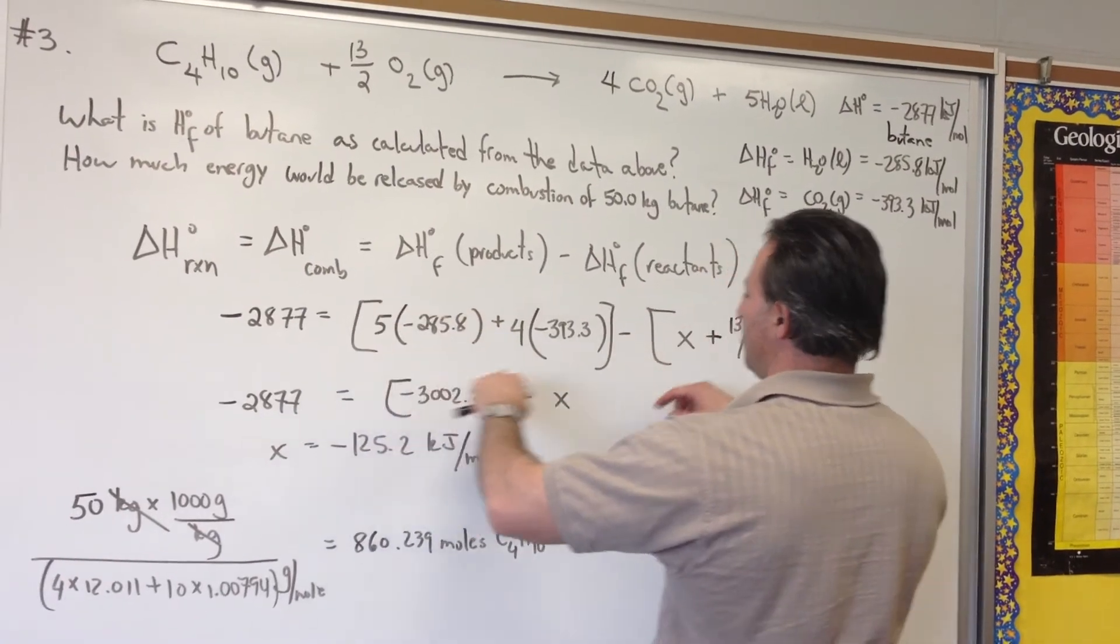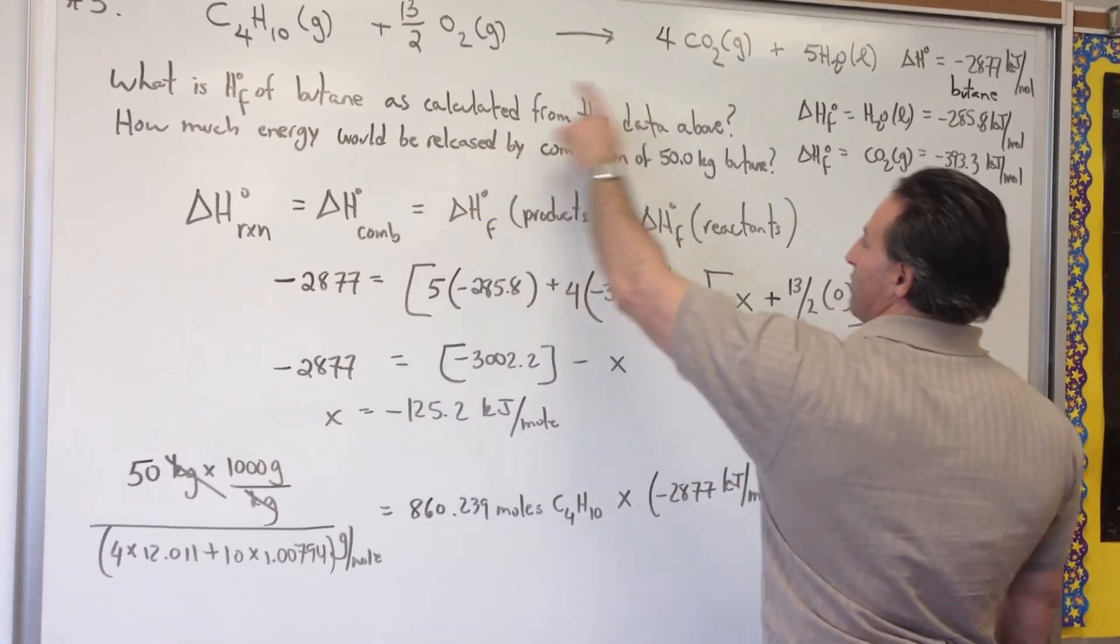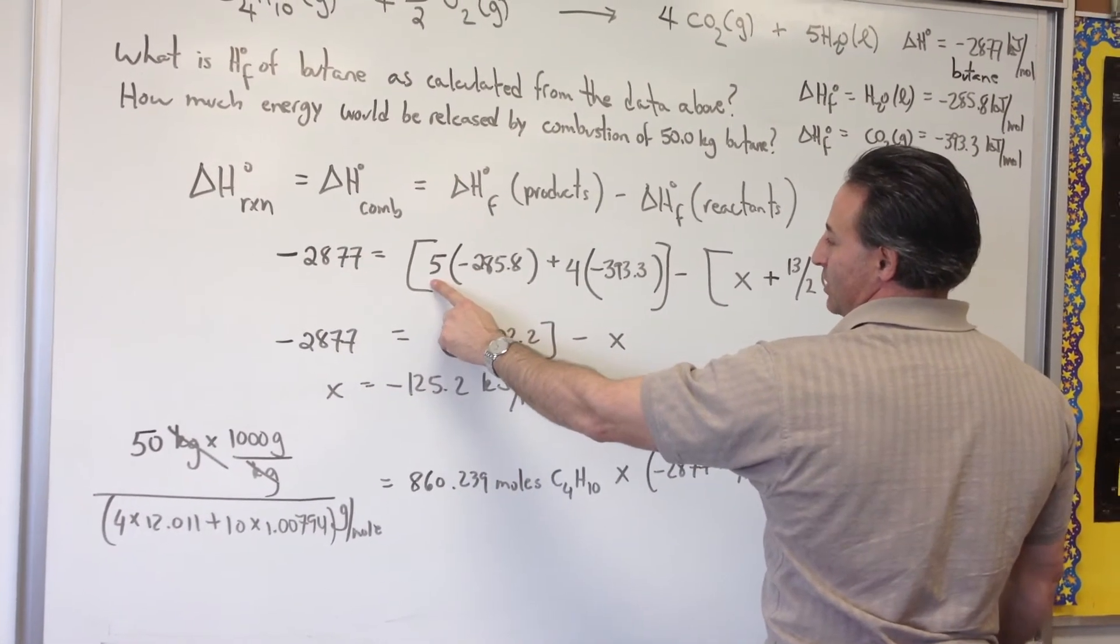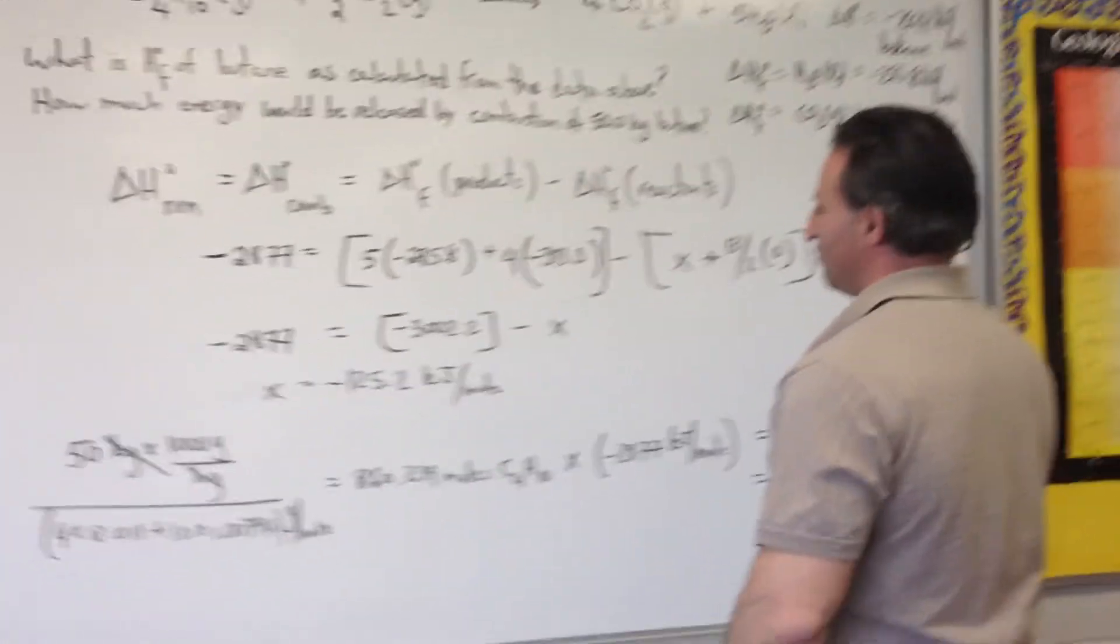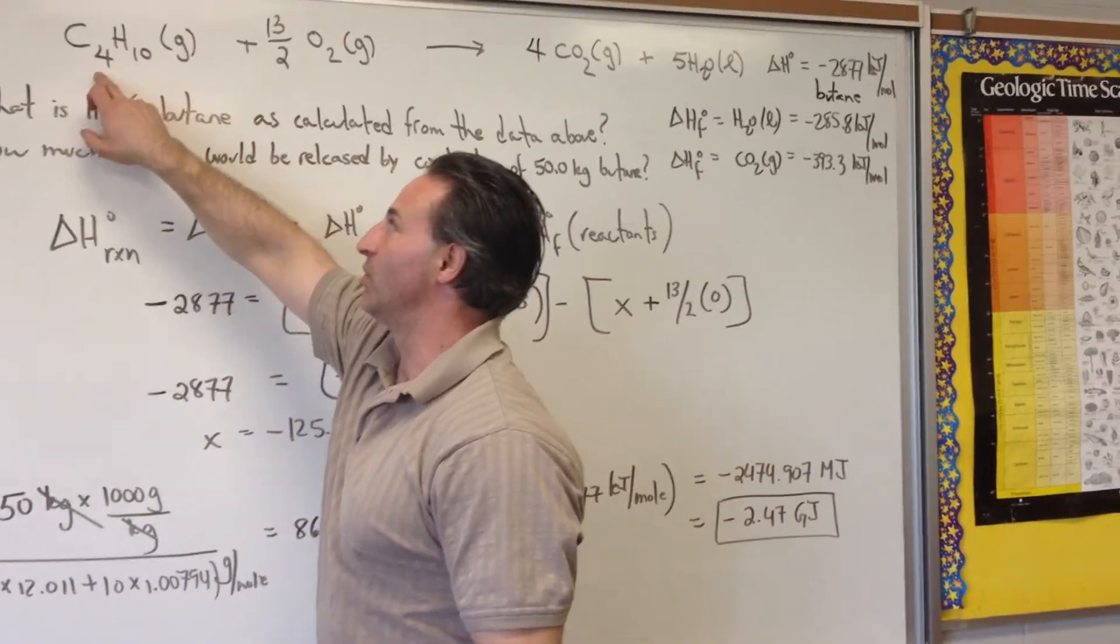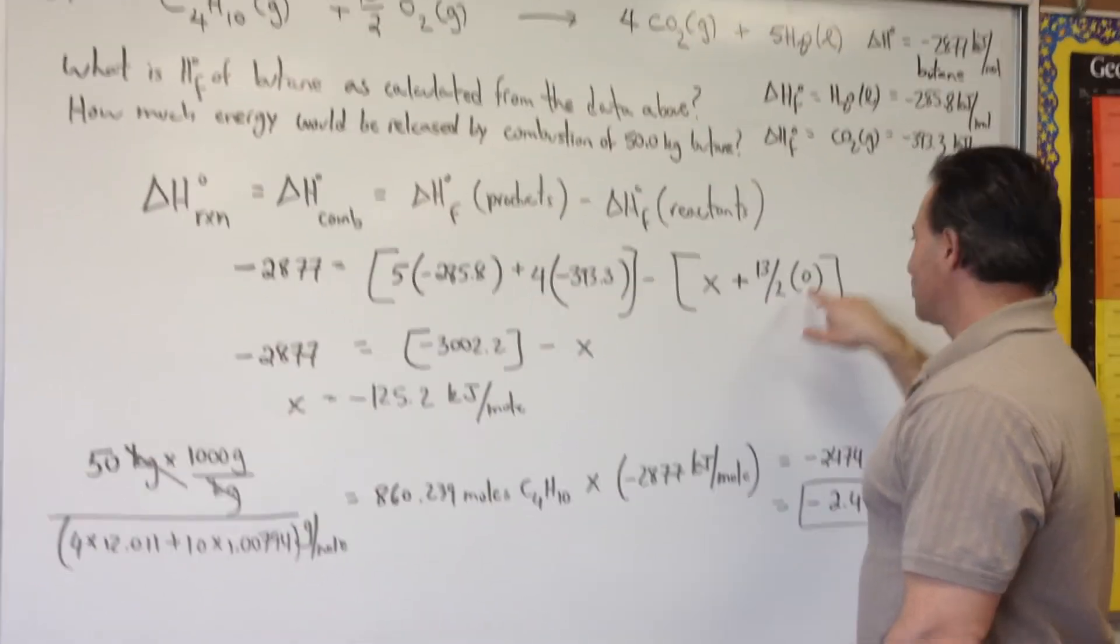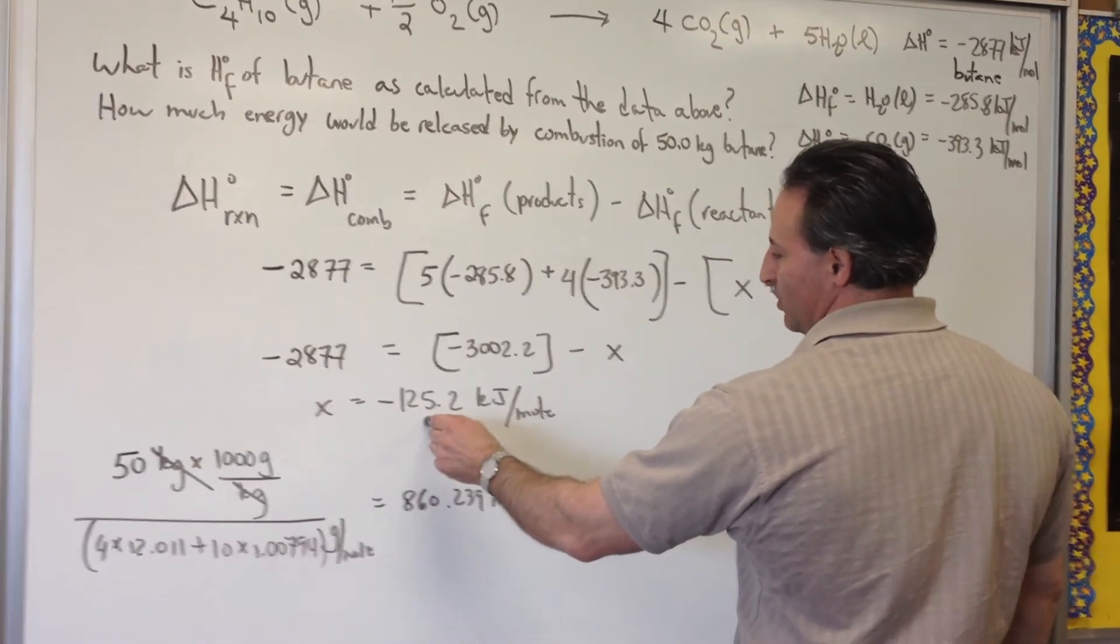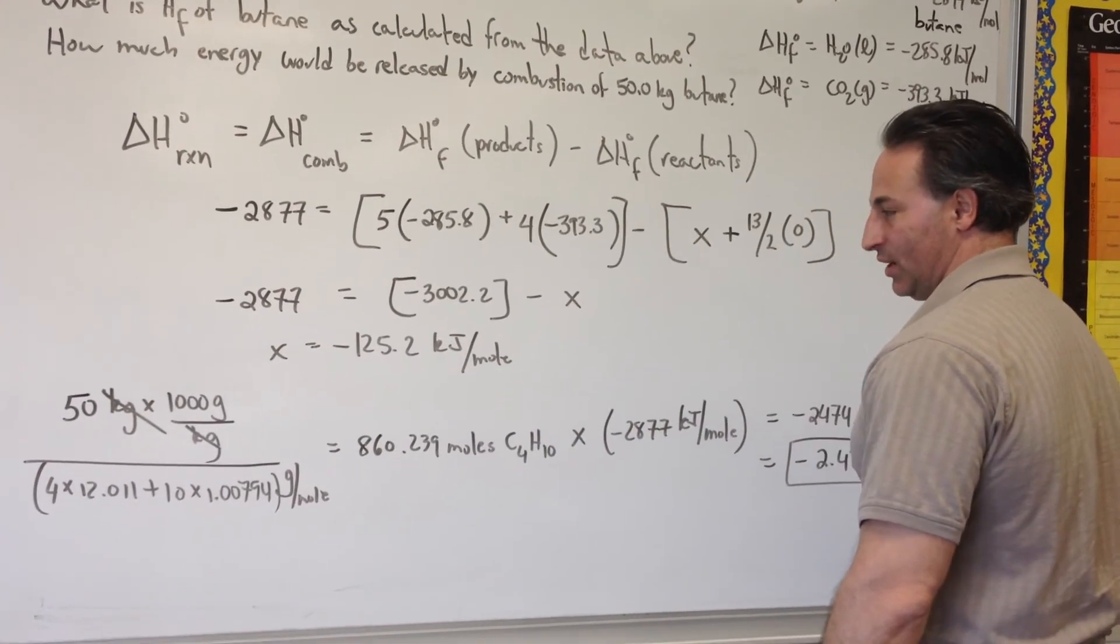I always advise that you make two big square brackets. You put the products in one and the reactants in another. These are the stoichiometric coefficients of the balanced equation. So I see five waters. There's the heat of formation for water with the five outside. There's the heat of formation for carbon dioxide with a four because the stoichiometric coefficient in this balanced equation is four. X represents the heat of formation of butane, which is what we're trying to find. The heat of formation of any element in its standard state is zero. Then we just do the math. Solve for X. We find out that the heat of formation for butane is negative 125.2 kilojoules per mole of butane formed.